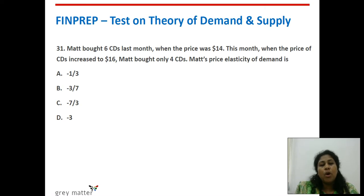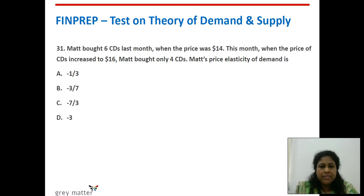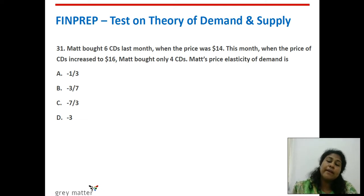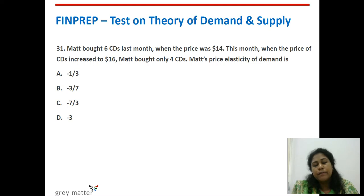Thirty-first question: Matt bought 6 CDs last month when the price was $14. This month when the price increased to $16, Matt bought only 4 CDs. Matt's price elasticity of demand is what? Using the arc elasticity formula: q1 = 6, q2 = 4, p1 = $14, p2 = $16. When you substitute into the formula, you get the answer as minus 3.